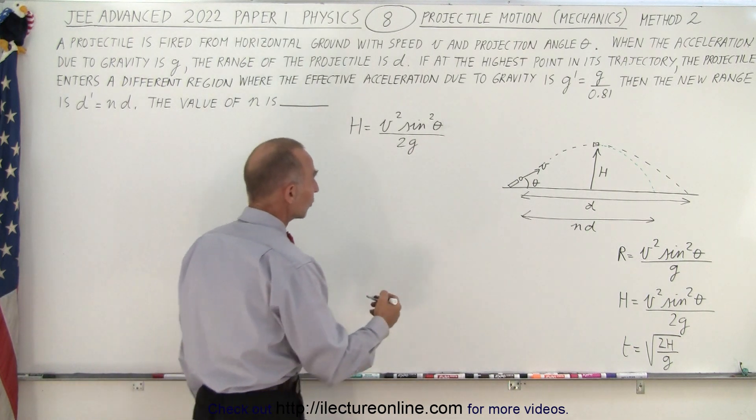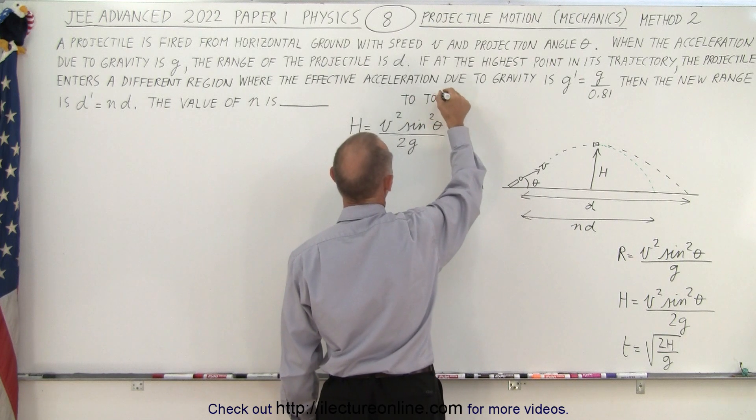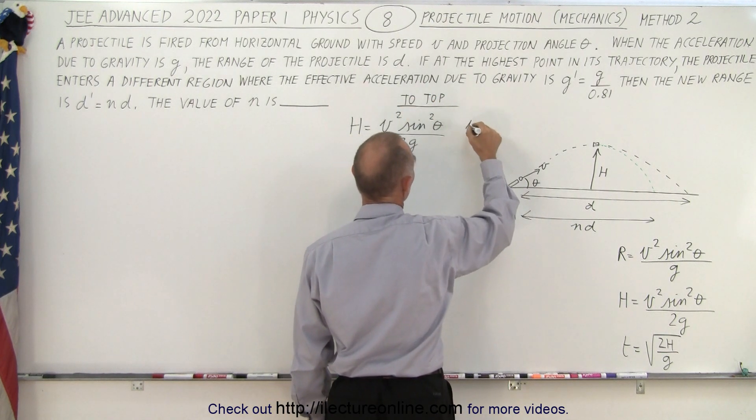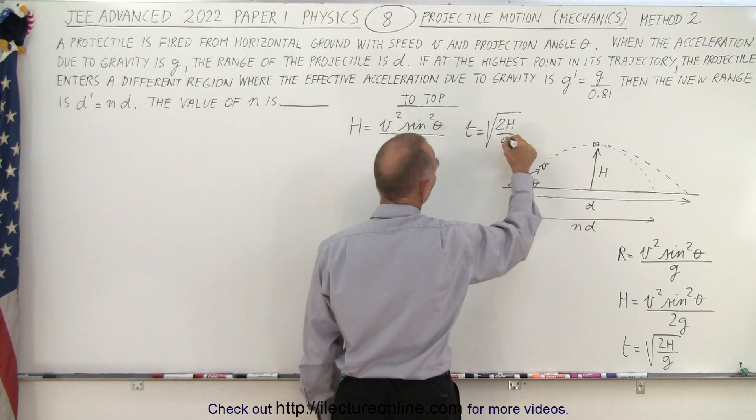Now how long did it take to get to the top? The time to get to the top, so this is to the top. The time that it took to get to the top is equal to the square root of 2h divided by g.